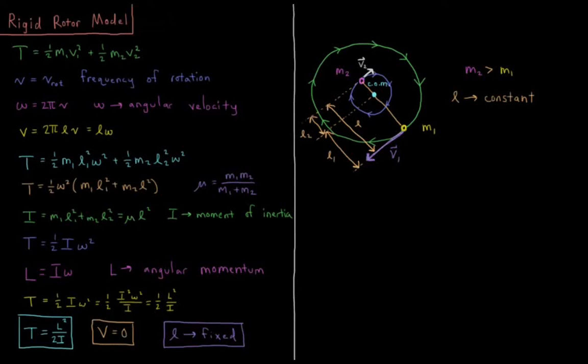In this video, we'll begin discussing our third quantum mechanical model system, which is called the rigid rotor. The rigid rotor, as the name suggests, is going to be a model for how molecules rotate.